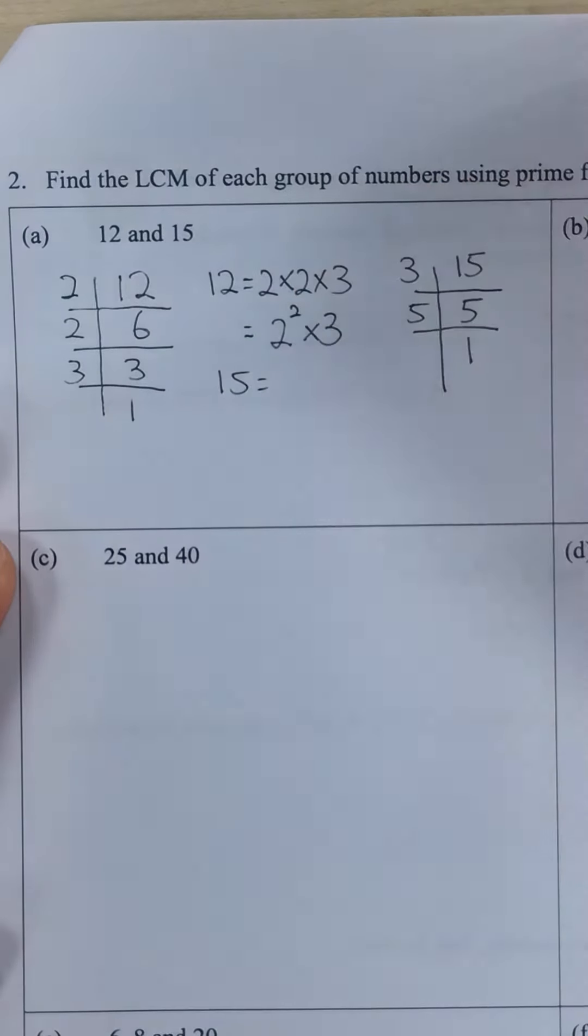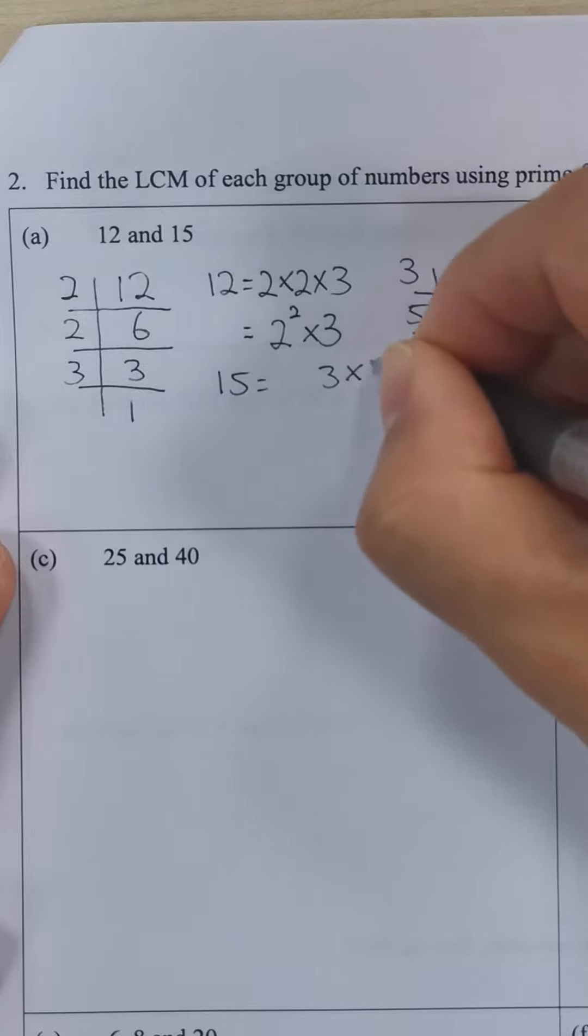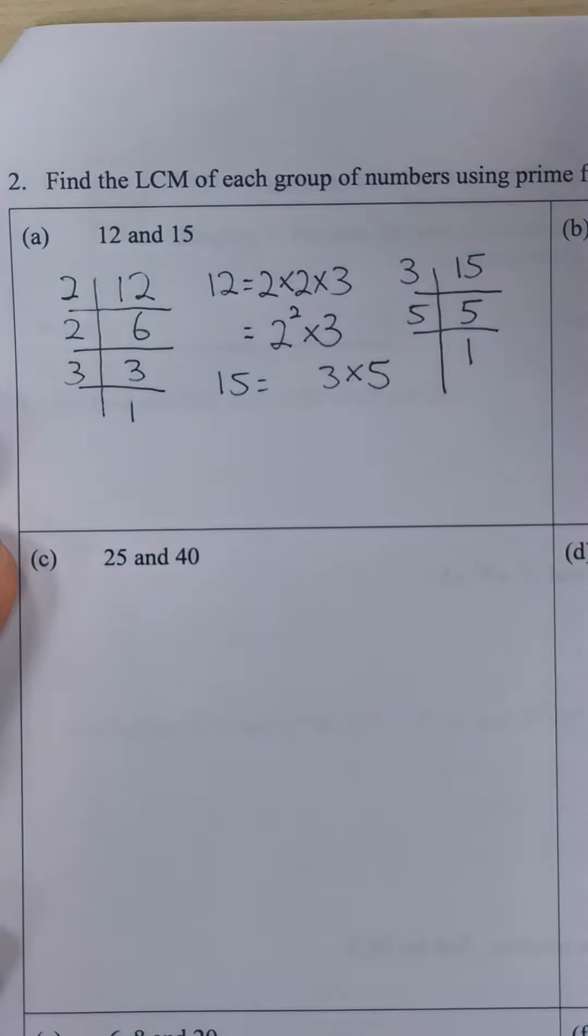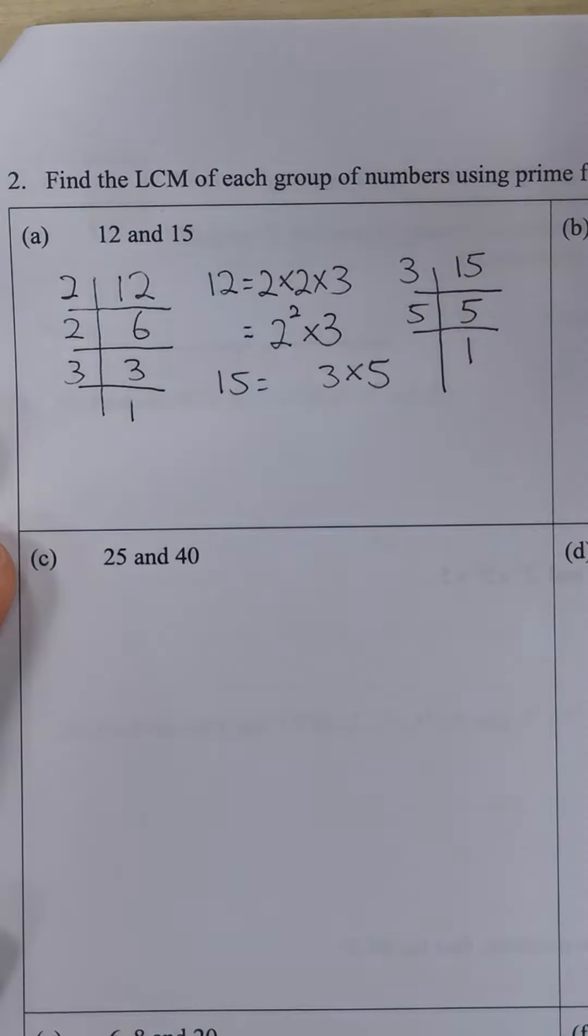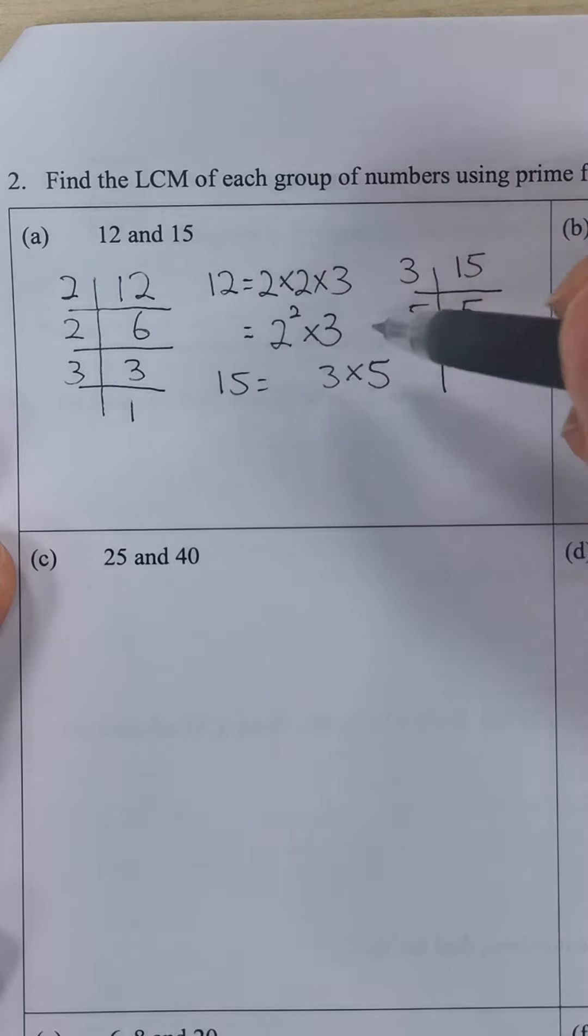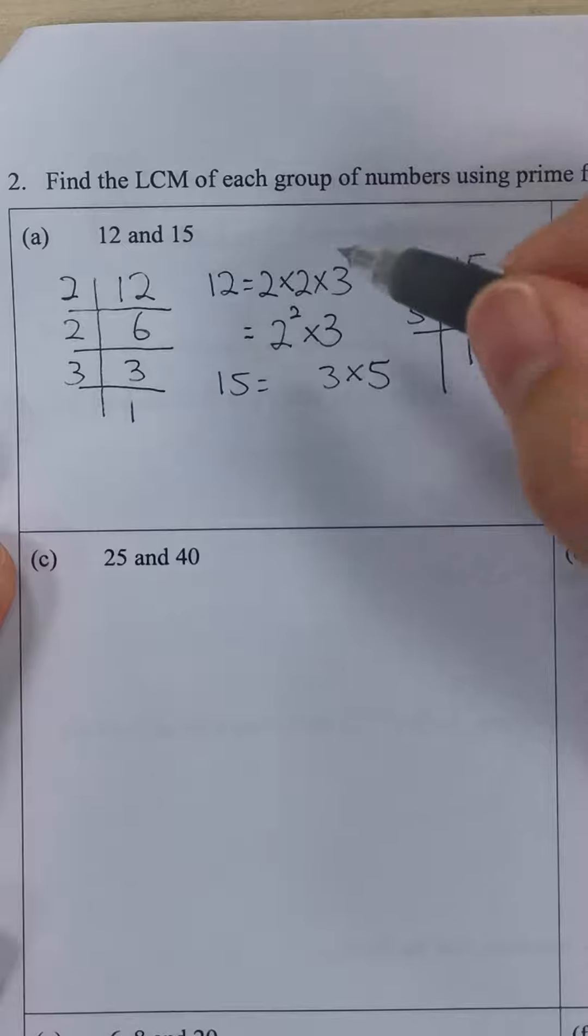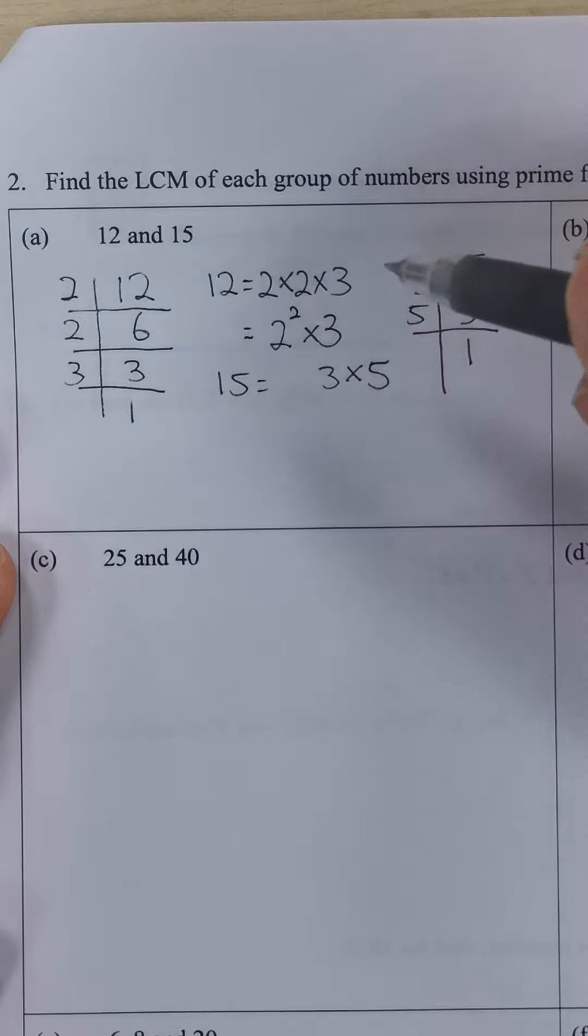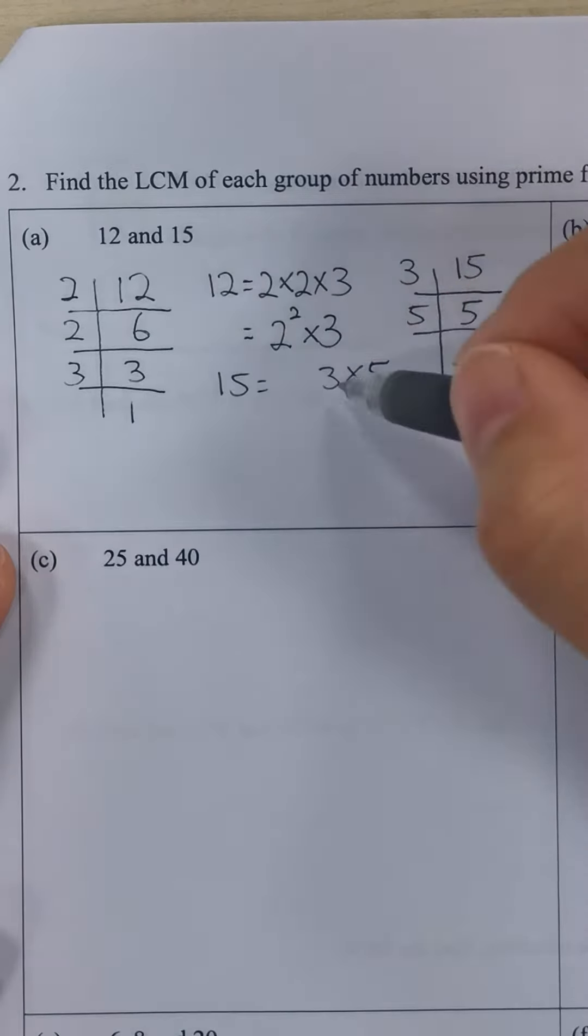To find the lowest common multiple, we compare the prime factors of the two numbers. Prime factors for 12 is 2 squared times 3, and the prime factors for 15 is 3 times 5.